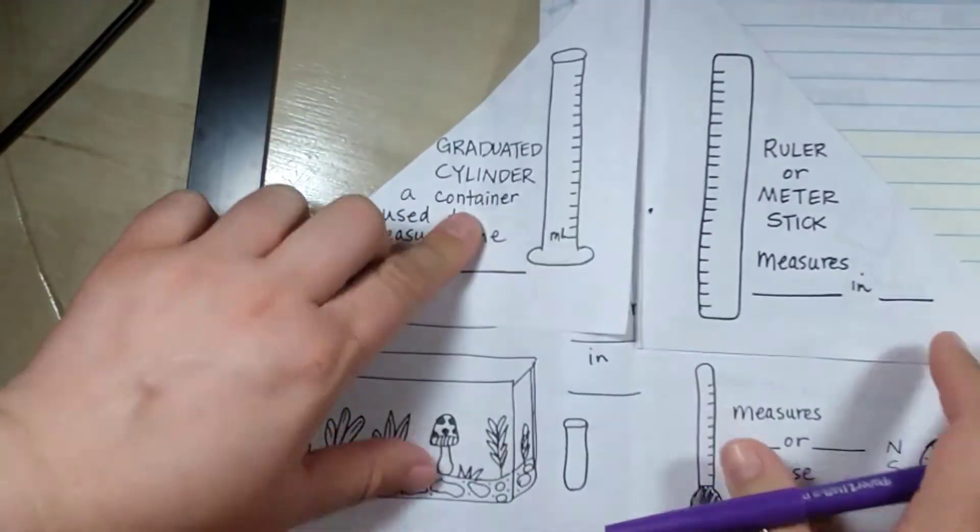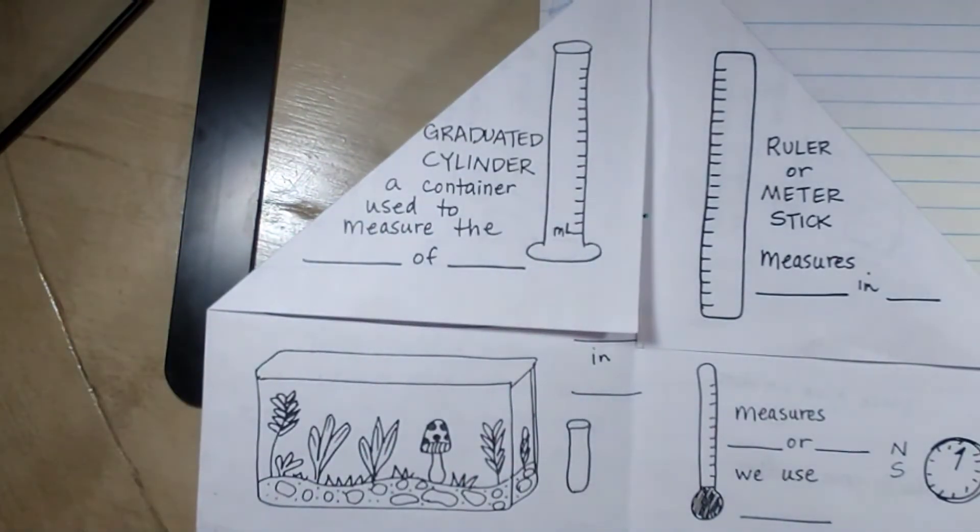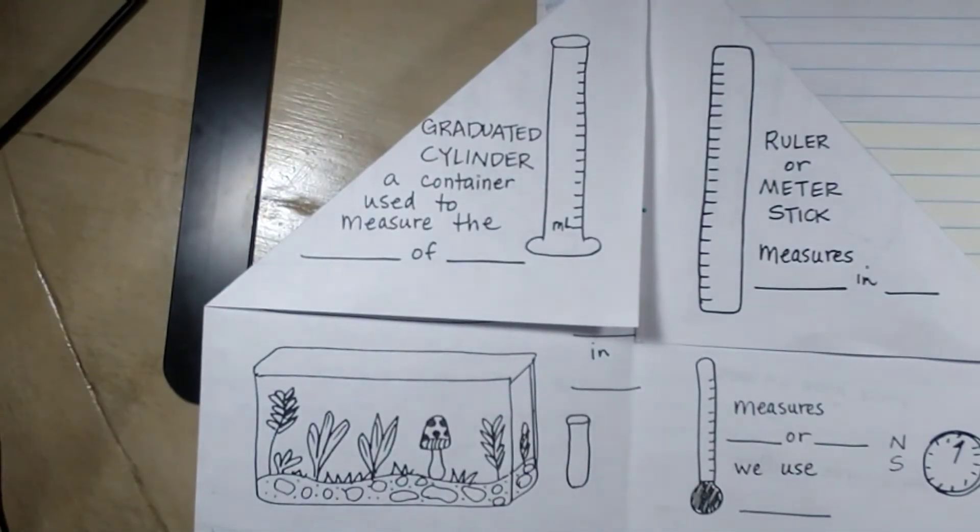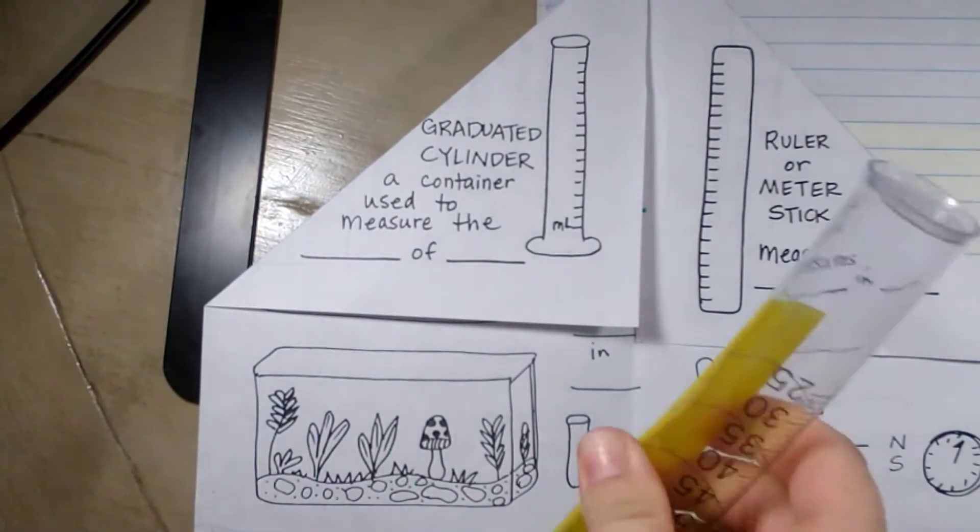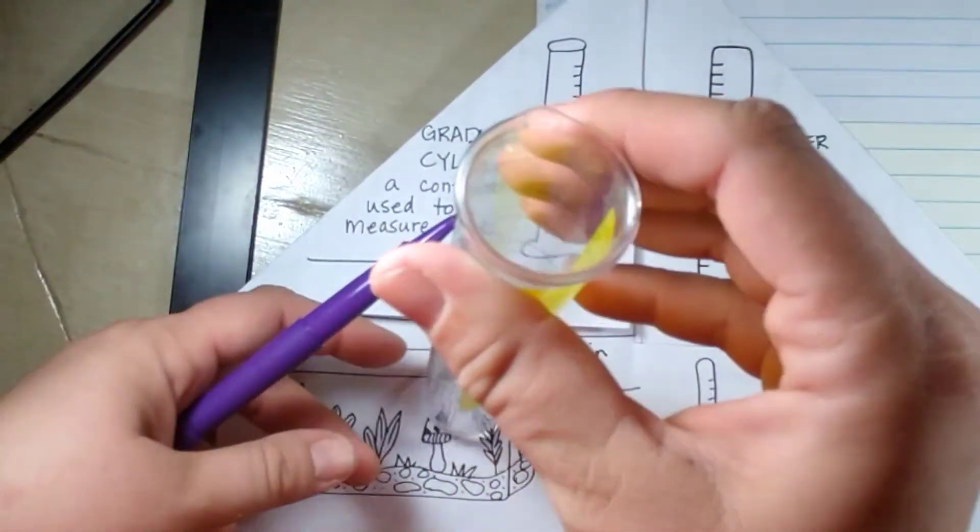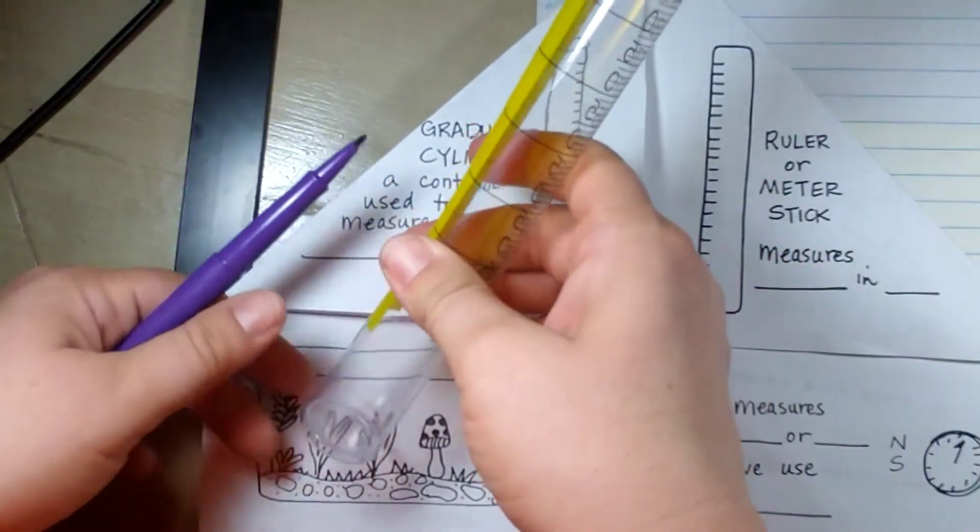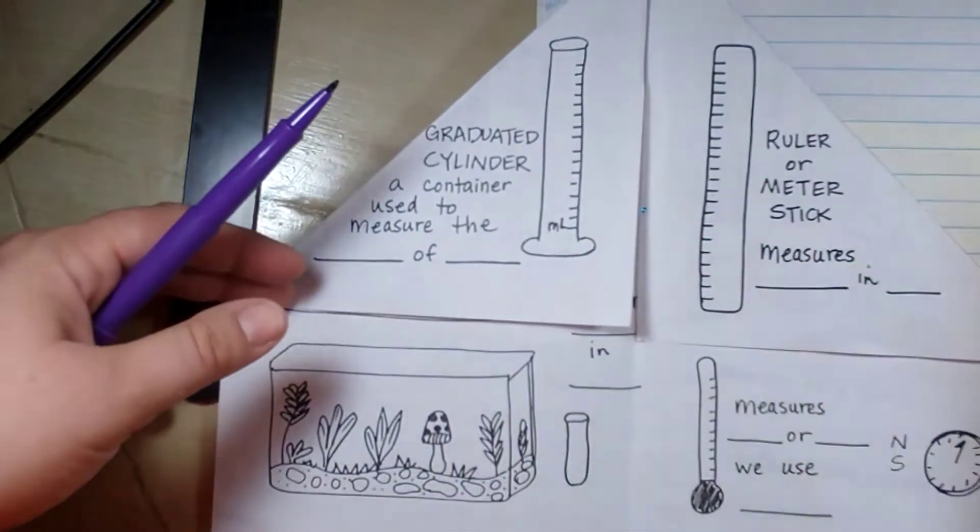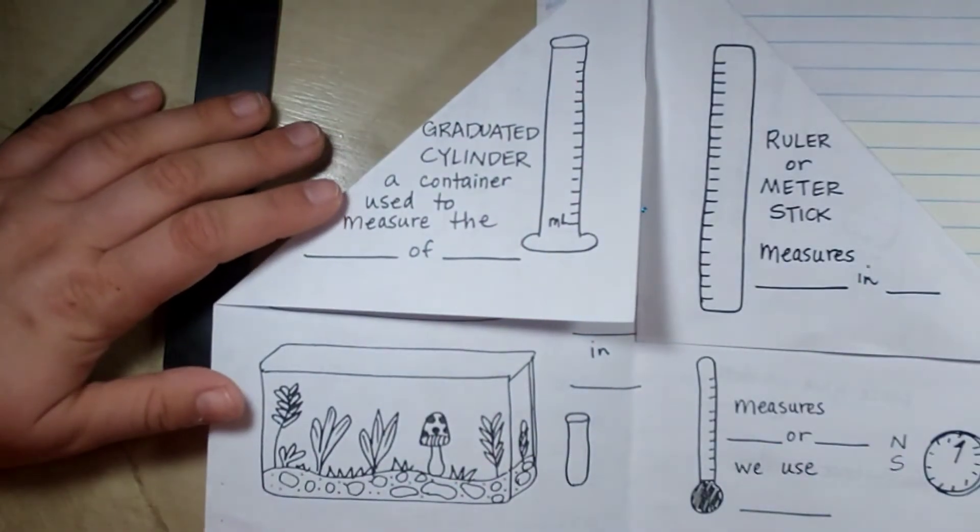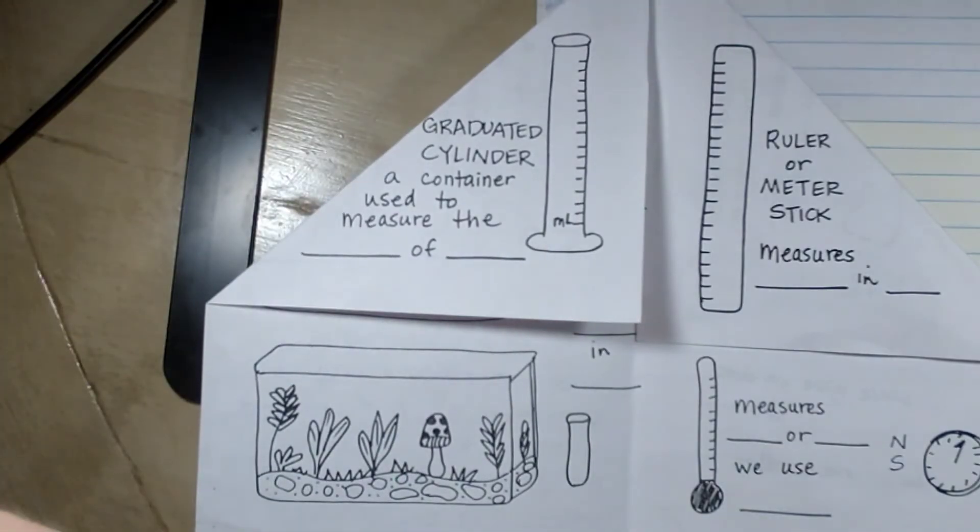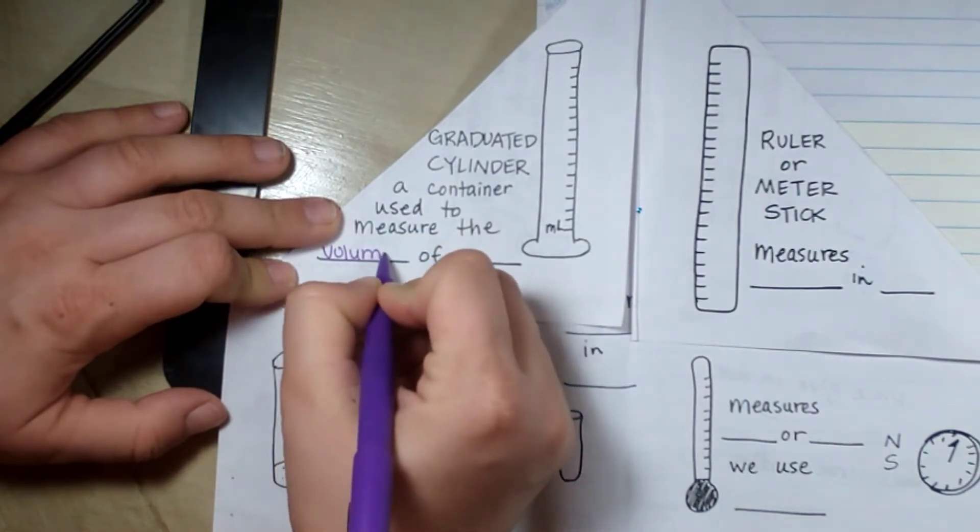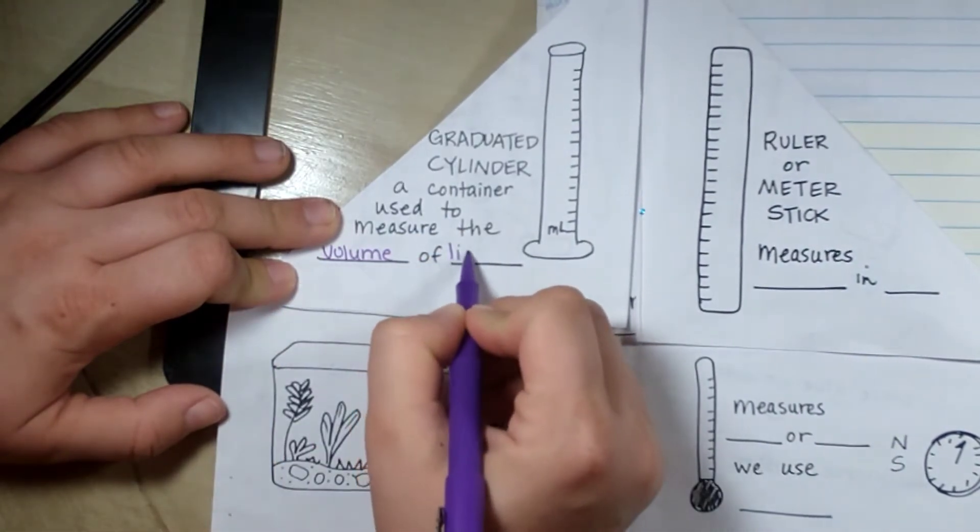Alright, so we're going to open it up and do a graduated cylinder. A graduated cylinder, I actually have one right here. This is a graduated cylinder. It is a tube that you put water in, or a liquid in, and it is used to measure the volume of liquids.